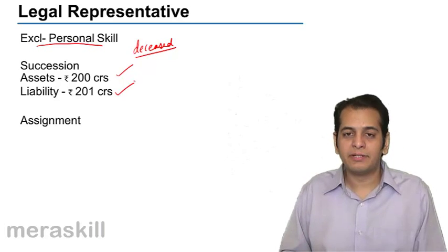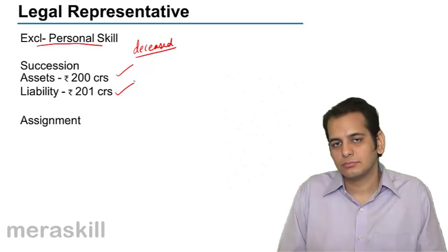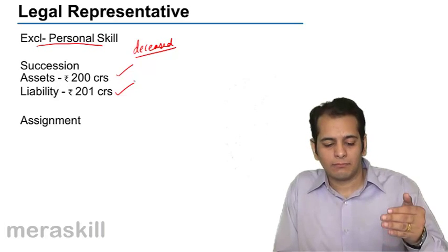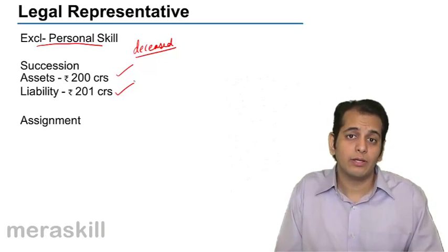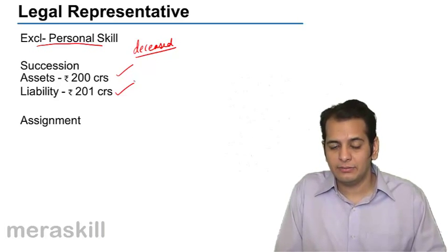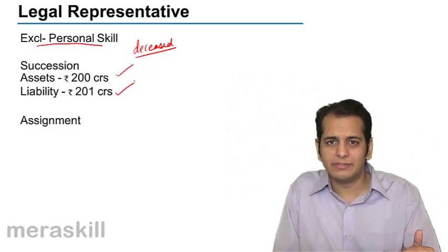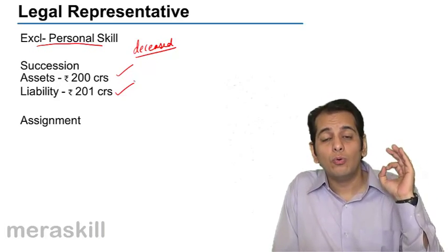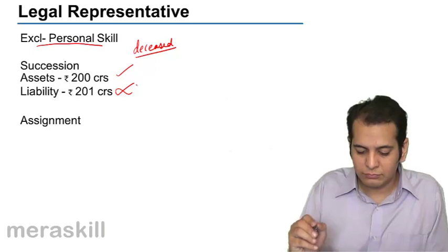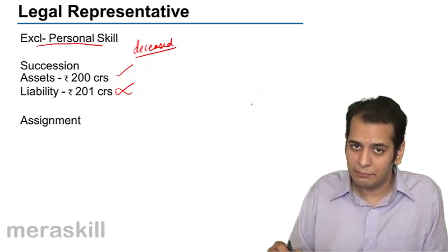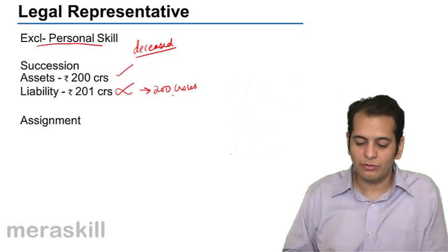Do you think this is a correct succession? Succession will happen this way - no. As I said, assets will get devolved of whatever amount they were, so the liabilities will get devolved only to the extent of assets. That means 201 crore liability will not get devolved. Liabilities will get devolved only to the extent of assets.